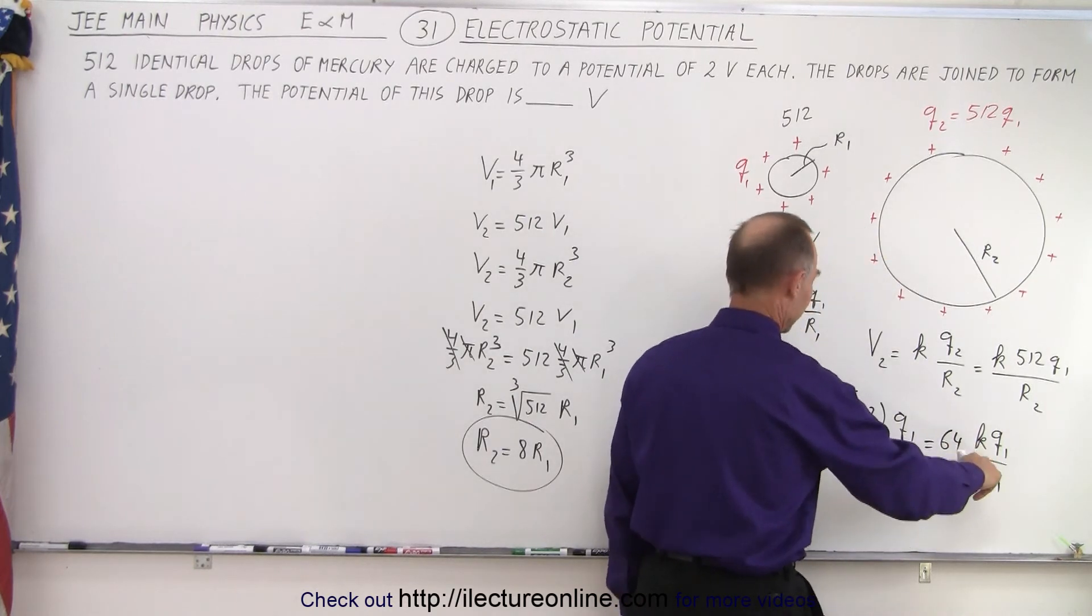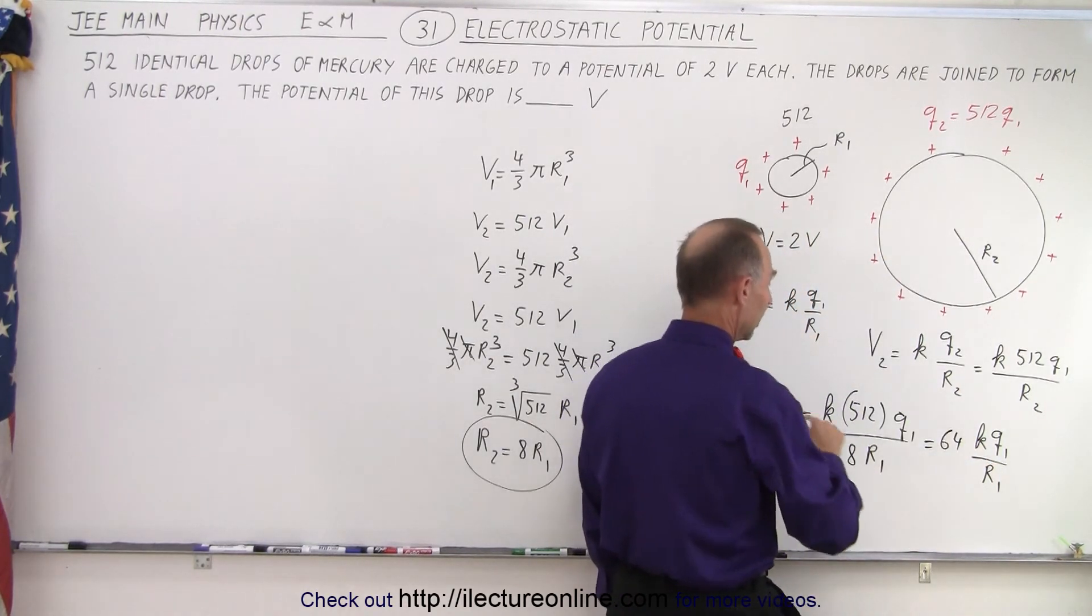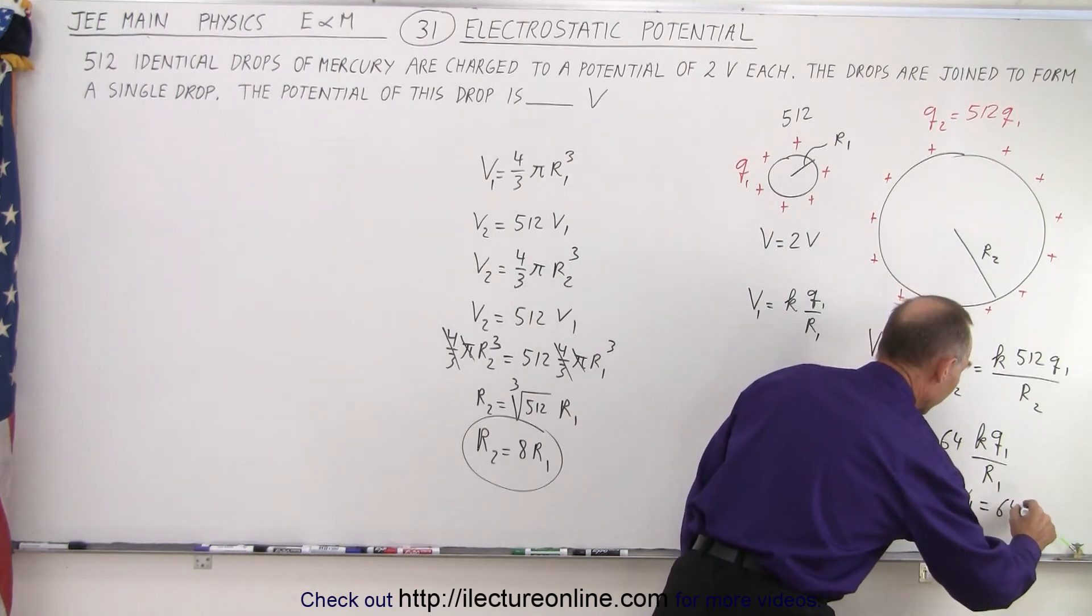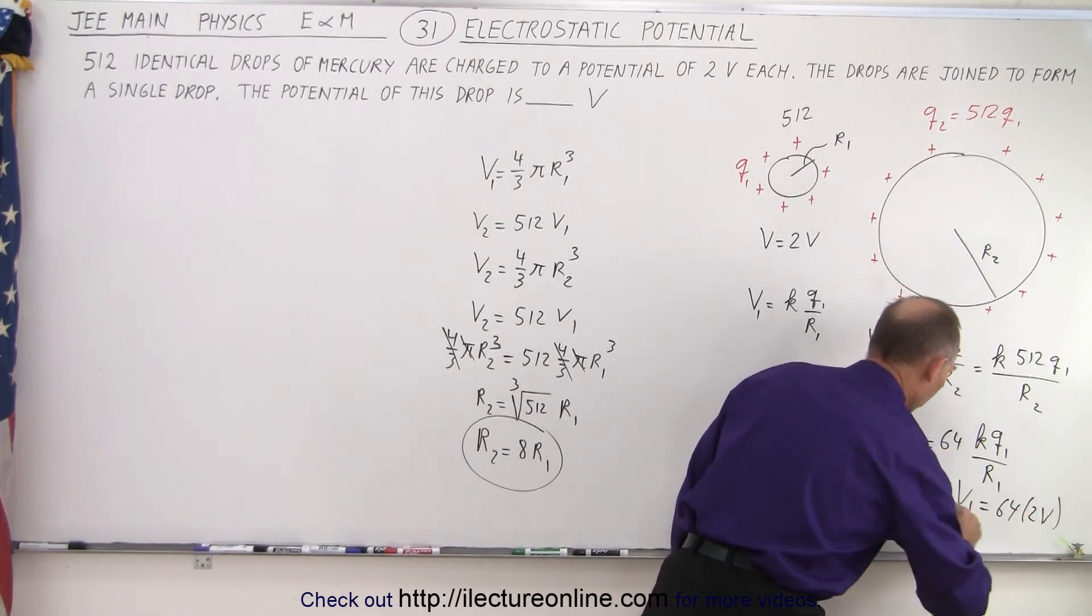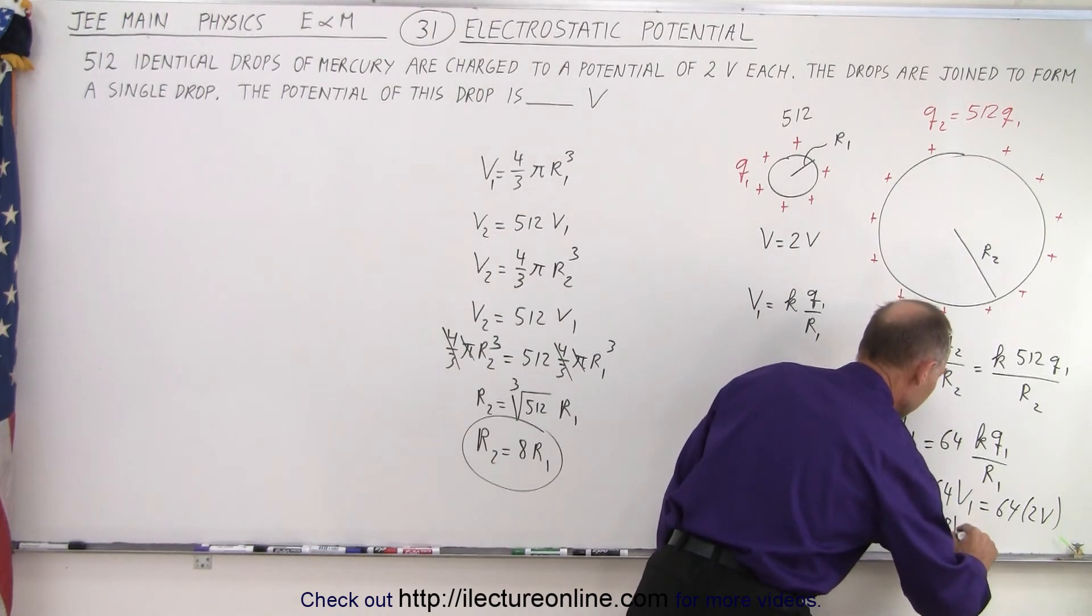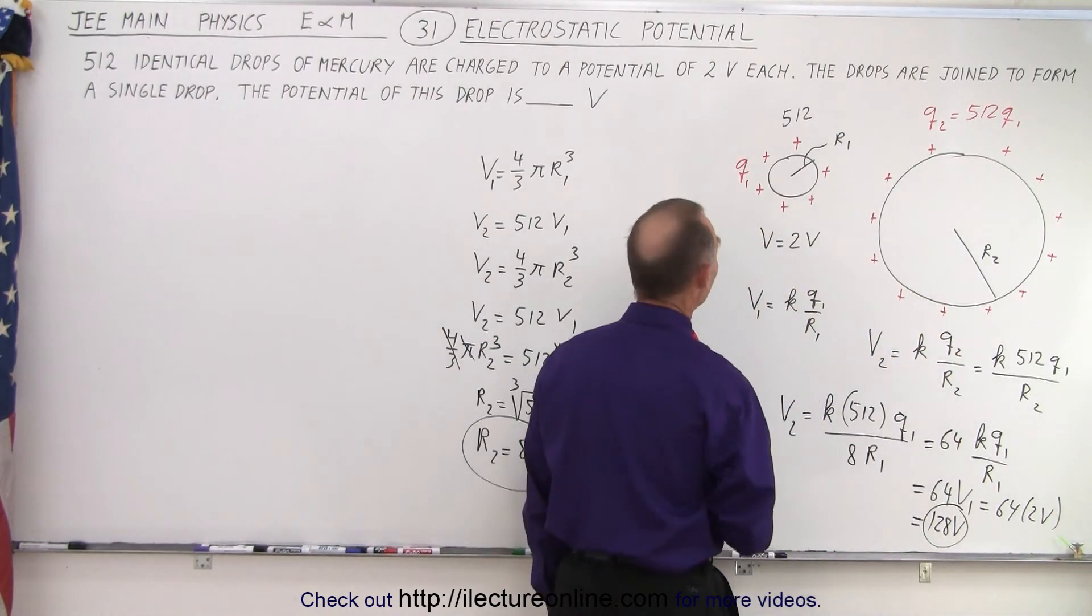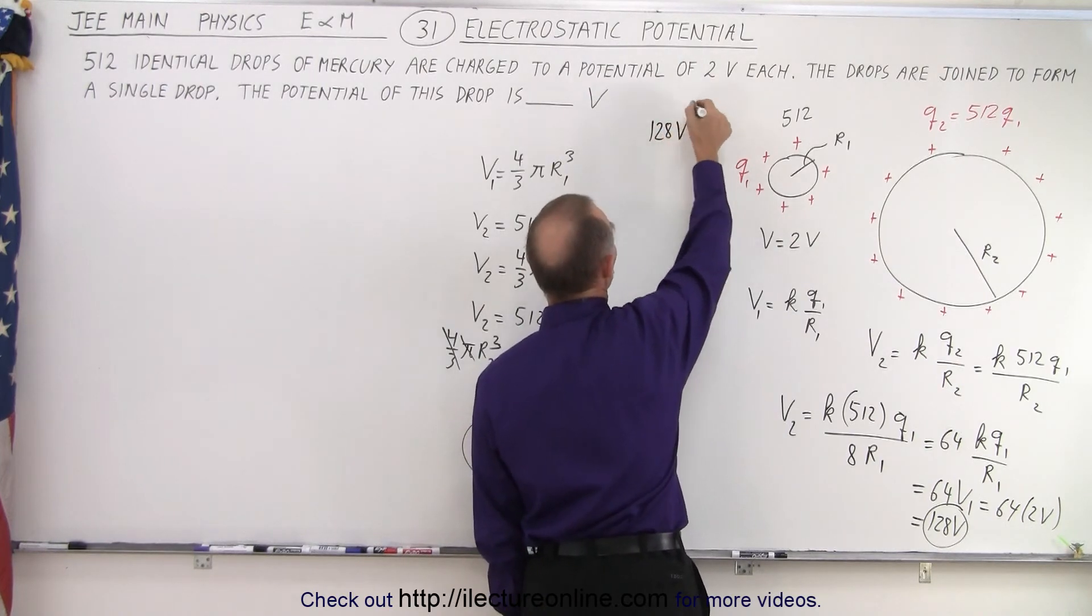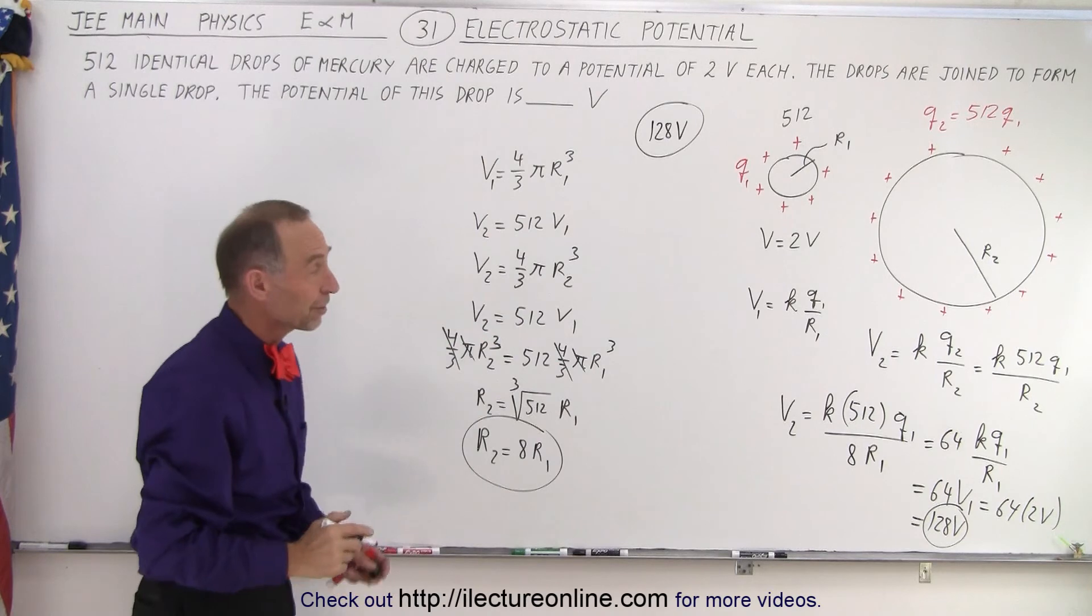And since this is equal to V1, that would be equal to 64 times V1, which is 64 times 2 volts, which is equal to 128 volts. And so that's the answer we're looking for. 128 volts will be the potential of the large sphere.